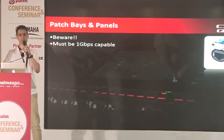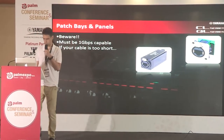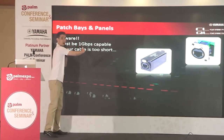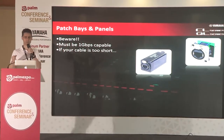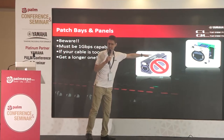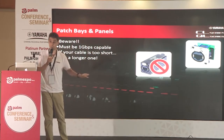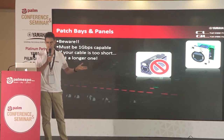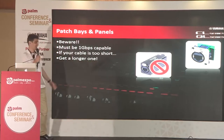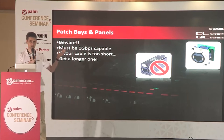Some of you may be considering using couplers to join two cables together when your cable is too short. If you use these, make sure they are one gigabit per second compatible, otherwise they will lose data. But still be very careful, because a lot of these do not carry data well and could make your network stop working — your network will become a 'not work.' So if your cable is too short, get a longer one or make a longer one. These are risky items when talking about audio networking.